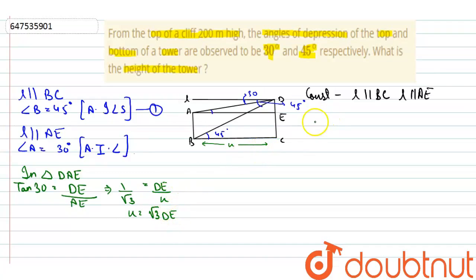Now, we know that the complete height of tower cliff is 200 meter. And height of tower is H. If height of tower is H and the complete height of cliff is 200, we can say that DE is equal to 200 minus H. So, X is equal to root 3 times 200 minus H. This is our second equation.